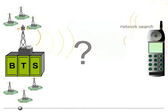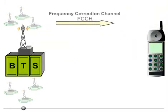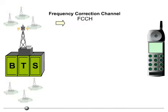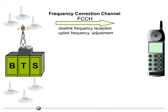For this purpose, the BTS sends out the frequency correction channel at short, regular intervals to help the mobile station find a frequency for downlink reception and adjust its frequency oscillator for the uplink transmission. To do so, it picks out the strongest received signal.